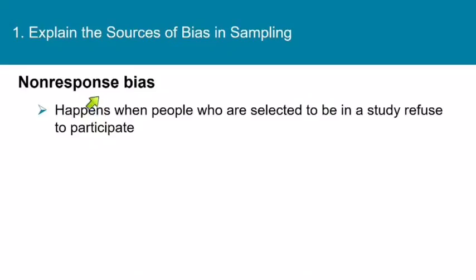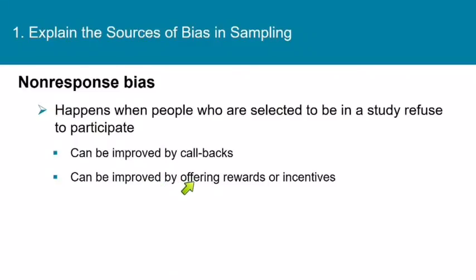Now let's talk about non-response bias. Non-response happens when people who are selected to be in a study refuse to participate. For example, when a pollster calls your house and you say you don't have time to talk and hang up, you're a non-response. Non-response bias can be improved by callbacks, or by offering rewards or incentives — like those receipts that say 'call to participate in this survey and we'll enter you in a drawing for a $500 gift card.' That's a reward offered to cut down on non-response.